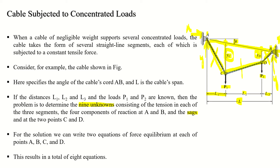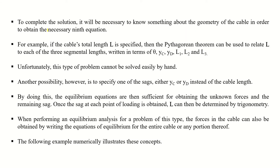For the solution, we can write two equilibrium equations at each of the four points A, C, D, and B, giving a total of eight equations. To complete the solution a ninth equation is needed, which requires knowing something about the cable geometry. One approach is to specify one of the sags, either YC or YD, instead of the cable length — this makes the eight equilibrium equations sufficient to find all unknowns.